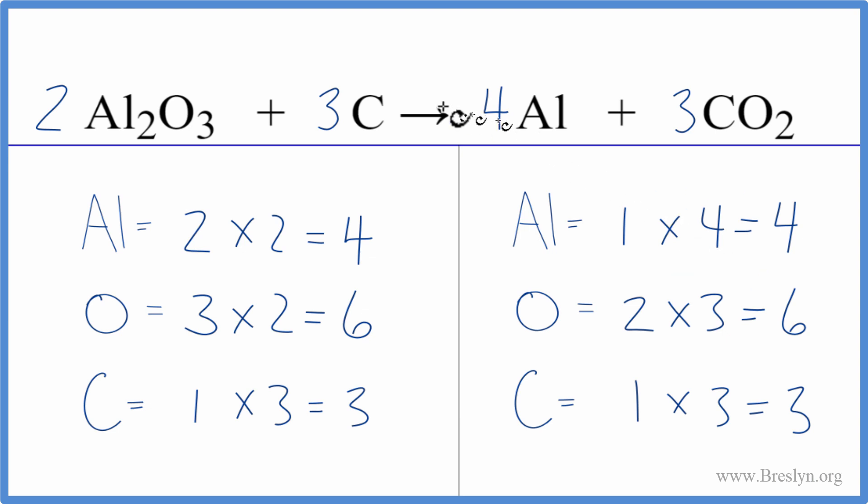So two little tricks here. If you have elements all by themselves, leave those till last when you're balancing equations. And then if you have an odd number, like we had with the oxygen here, we had three. Sometimes multiplying that by two will help you balance the equation.